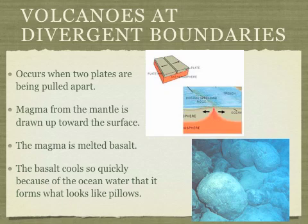Let's talk about volcanoes at divergent boundaries, where plates are moving away from each other. We talked about this when discussing seafloor spreading. In this case, magma from the mantle goes up towards the surface. This magma is melted basalt, so it's a really dense magma. The basalt cools so quickly because of the ocean water that it forms what looks like pillows, which is what we see on the right.